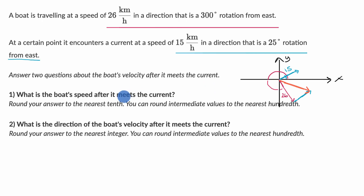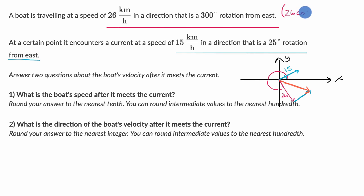We don't want to just figure it out visually — we want to figure out the actual speed, which would be the magnitude of this vector, and its actual direction. What is the rotation, the positive rotation, from the positive x-axis or from due east? To do that, I'm going to represent each of our original vectors in terms of their components. This red vector's x component is going to be its magnitude 26 times the cosine of 300 degrees, and its y component is going to be 26 times the sine of 300 degrees.